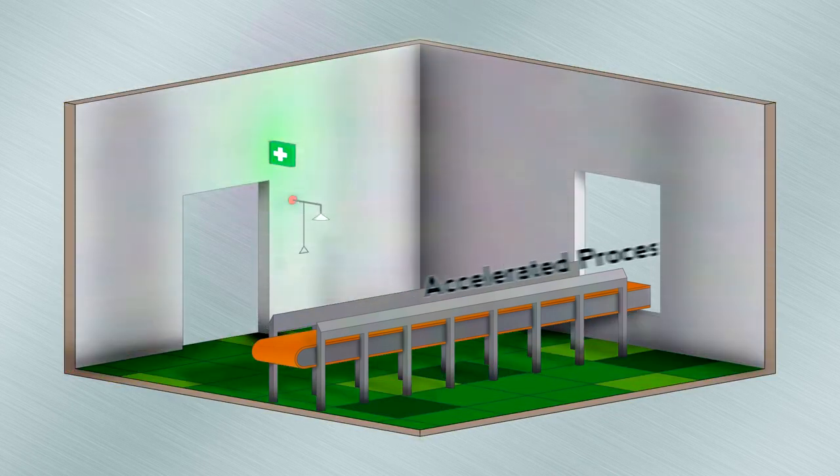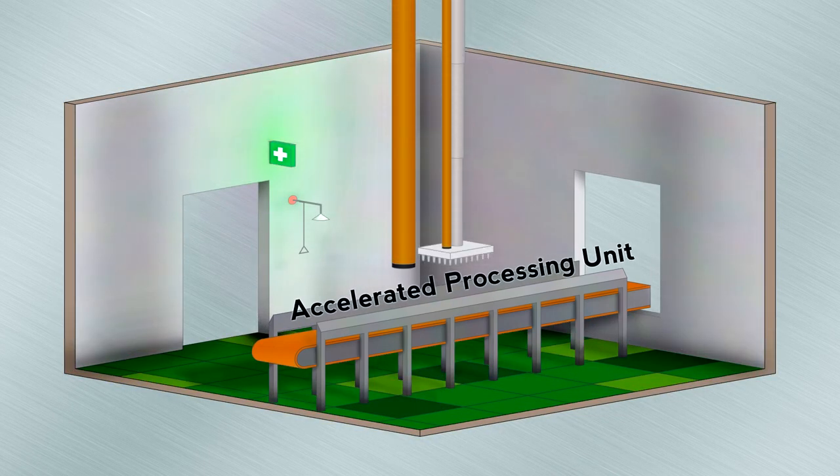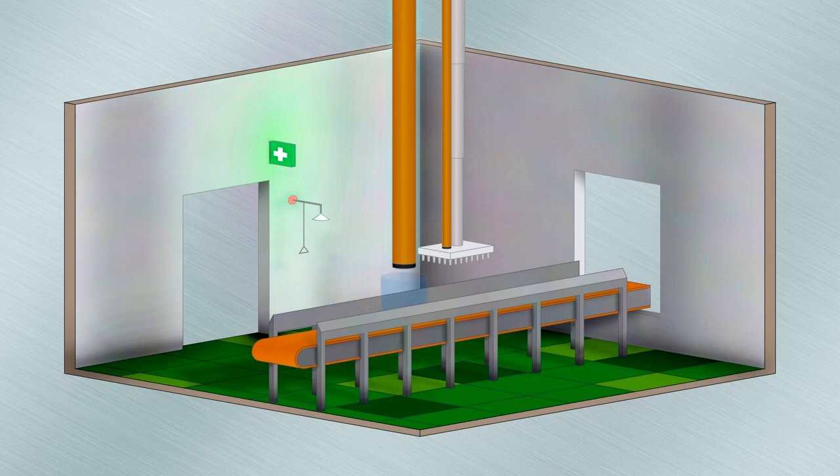This combined chip is called an Accelerated Processing Unit or an APU. APUs are skilled in both complex decision-based problems and the more modern highly parallel tasks.